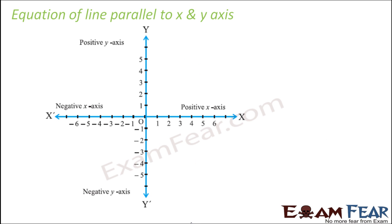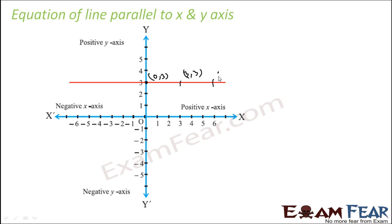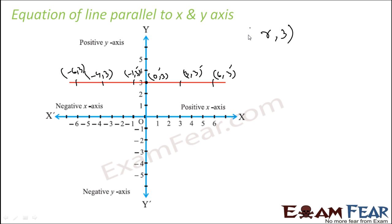Now let's take a line that is parallel to the x axis. If you see the points: this point is (0, 3), this point is (3, 3), this point is (6, 3), this point is (−1, 3), and this point is (−4, 3). The y part is always 3, but the x part varies. So the general form is (r, 3), and this line is parallel to the x axis, where y is constant and x can be any real number.